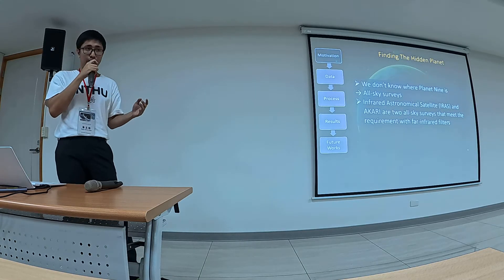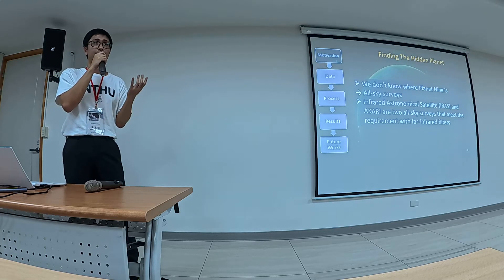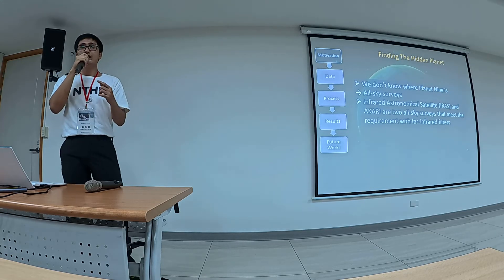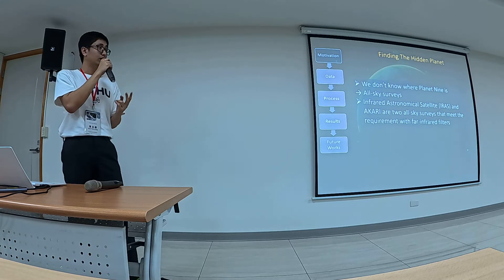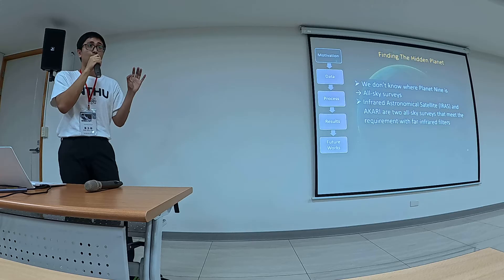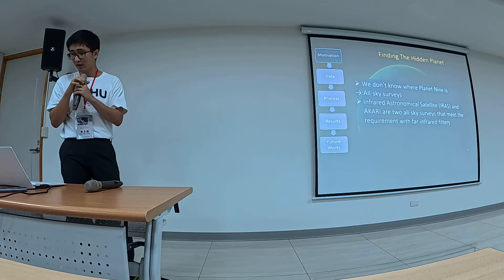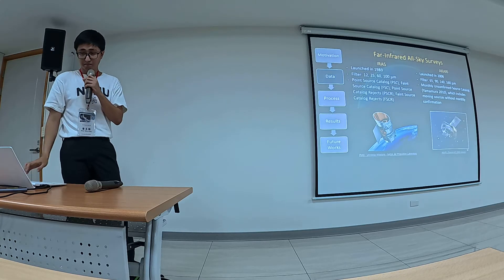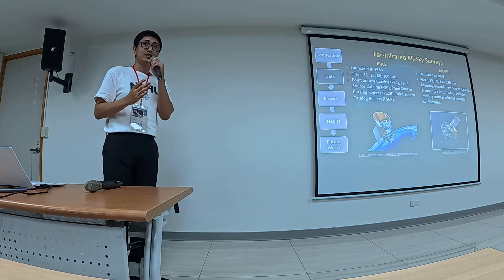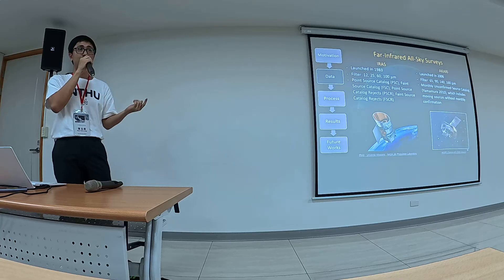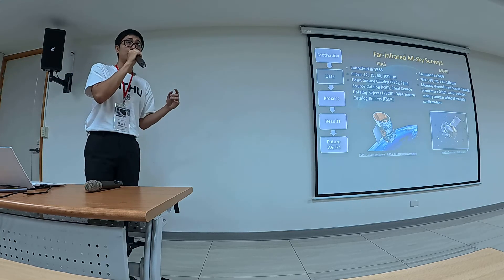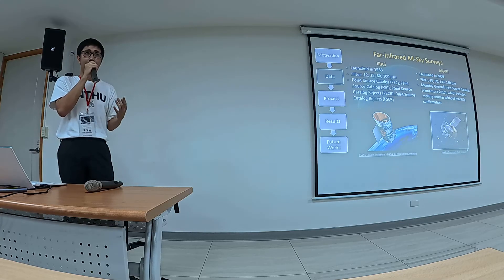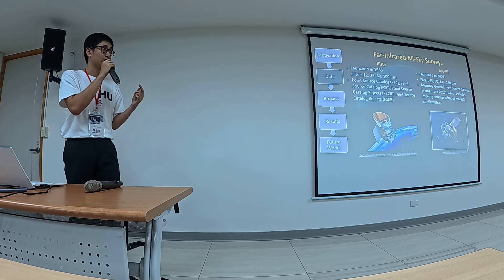Because we do not know where Planet 9 is in the outer solar system, we need an all-sky survey. There are two all-sky surveys meeting this requirement with far infrared filters: IRAS and AKARI. For IRAS we use four main catalogs: the point source catalog, faint source catalog, point source reject catalog, and faint source reject catalog. The rejected catalogs contain sources that failed confirmation in multiple scans.